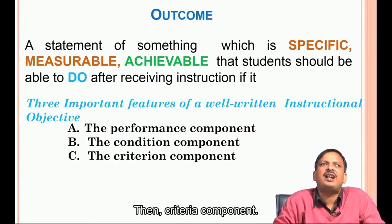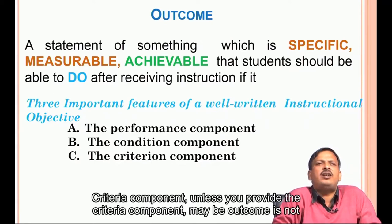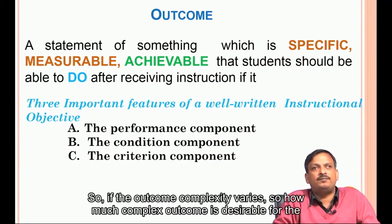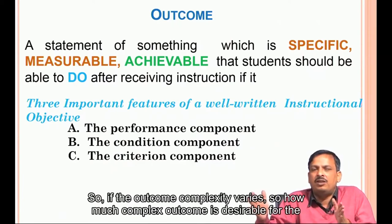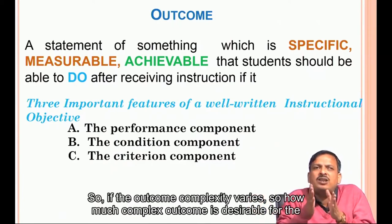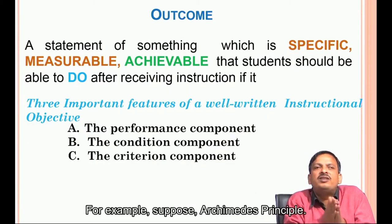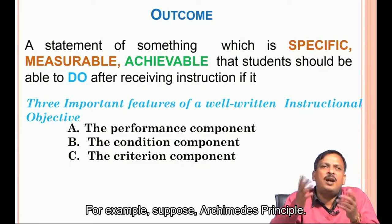Then the criteria component. Unless you provide the criteria component, the outcome may not be achievable. The complexity of an outcome varies — so you must decide how much complexity is desirable for a given document or course.